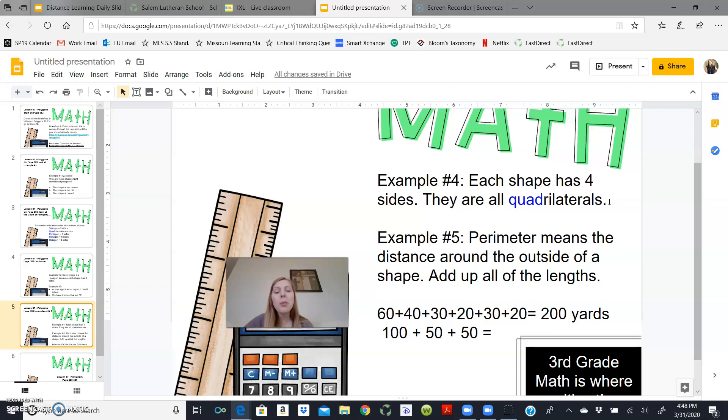Let's look at example number 5. Example number 5 says Simon ran the perimeter of the playground once. How far did he run? Now to refresh your memory yet again, perimeter means the distance around the outside of a shape. So we need to add up all of those lengths. And I've already typed up those lengths for you. And I've also solved, but we'll talk about that.